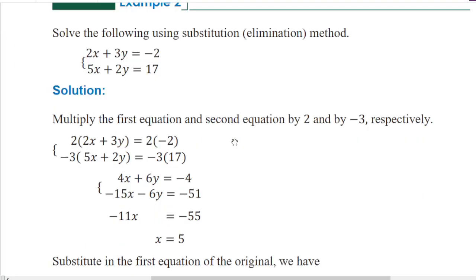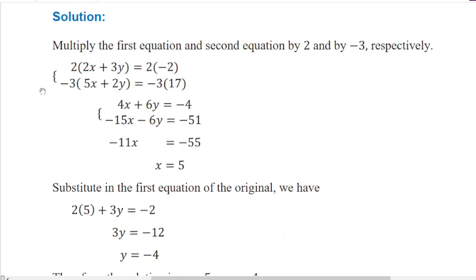Let's study the elimination model. Positive two, because two times three is six; minus three times positive two is minus 6y. Two times two is four, two times three is six y, two times minus two is minus four. Negative three gives negative, so 4x minus 15x is minus 11x; minus 4 minus 51 is minus 55.